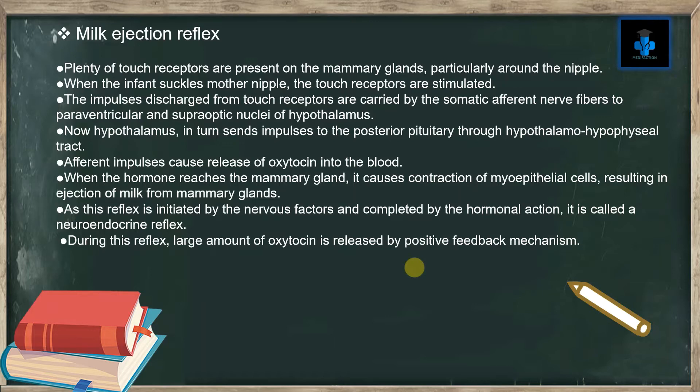The afferent impulses cause release of oxytocin into the bloodstream. When the hormone reaches the mammary gland, it causes contraction of myoepithelial cells, resulting in ejection of milk. As this reflex is initiated by nervous factors and completed by hormonal action, it is called a neuroendocrine reflex. During this reflex, a large amount of oxytocin is released by a positive feedback mechanism.